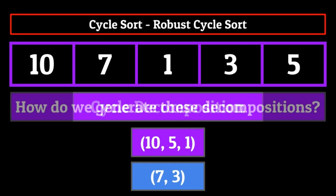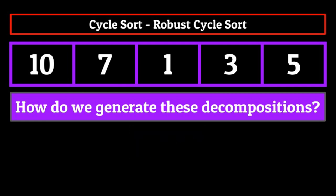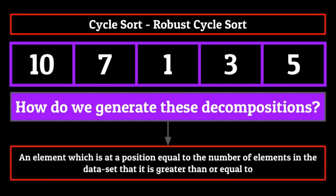Each group of elements simply means take each element and cycle it forwards to the next element in the decomposition. So for the first one: take 10 and put it where five is, then take five and put it where one is, then take one and put it where 10 was. For the second decomposition: take seven and put it where three is, then take three and put it where seven was. This is the backbone of cycle sort. The big question then becomes how do we generate these cycle decompositions? We need a way to determine where a particular element in the array should be placed. In other words, we need a way to determine where in the data set an element is sorted.